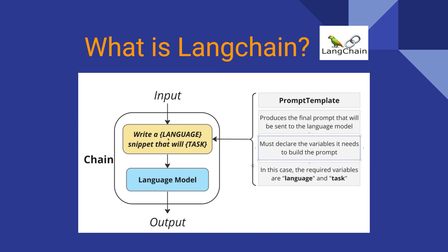LangChain is the basic tool for building LLM-powered applications. The language model can take an input prompt as text and create context to execute a function. For example, an input prompt might be: 'Write a Python snippet that will create a function using the API.'